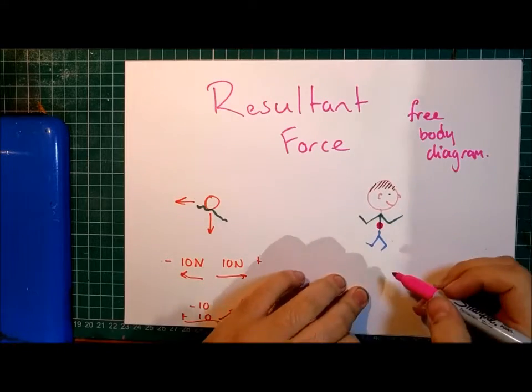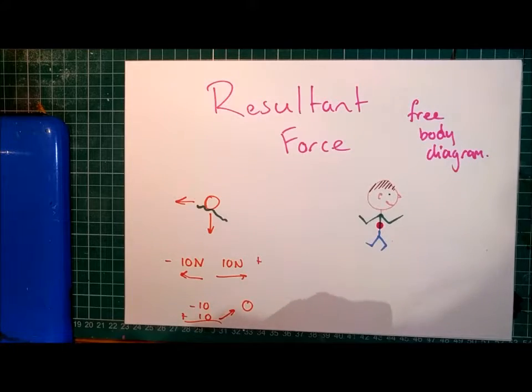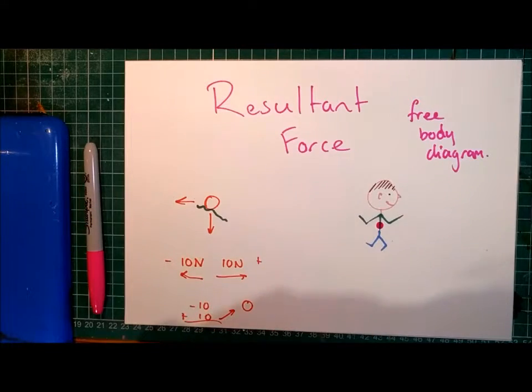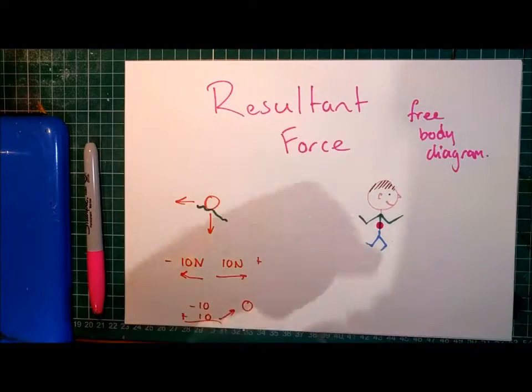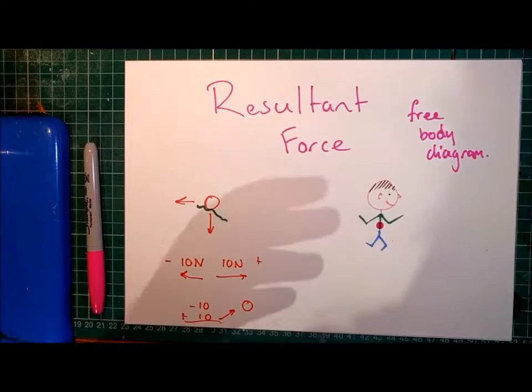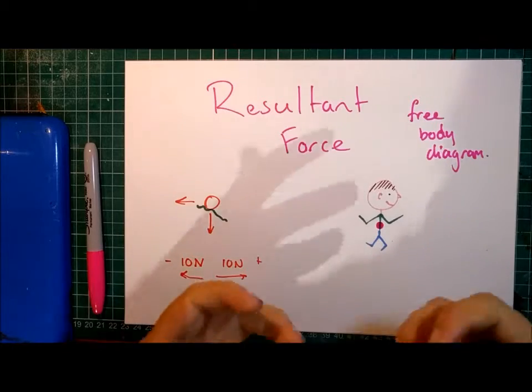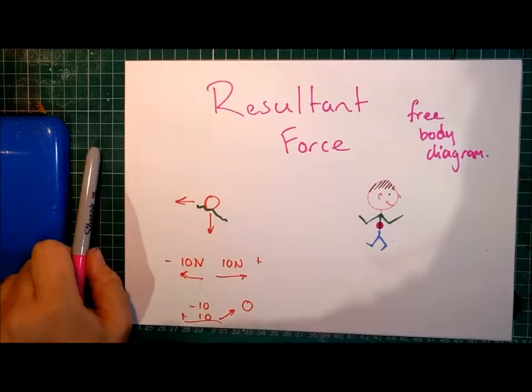So, I wouldn't really be drawing this running man in the first place, I would just draw my dot. And then, coming away from that dot, I would draw an arrow to represent each of the forces acting on that body, on that object. Each of those forces will be pointing in the same direction that the force acts, and the length of that arrow will represent its magnitude, how strong a force it is.